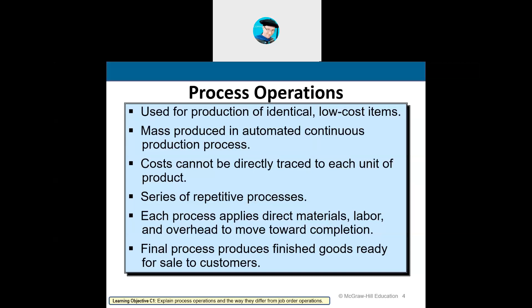When you hear the word 'process,' think continuous process. It's a homogeneous product — they're only making one thing. Think of Dreyer's ice cream, Larry's, or Ben & Jerry's — that's a continuous process. They're going to keep making batches of ice cream regardless of customer orders. It's continuous.